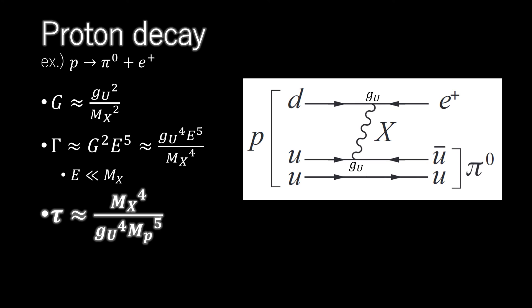And so we finally arrive at tau for the lifetime of the proton in natural units. Taking Mx to be 10 to the 15th GeV over C-squared and GU-squared over 4π to be 1 over 42 gives an estimate of 10 to the 31st years.